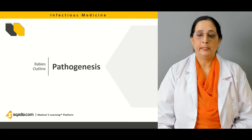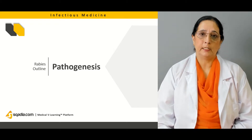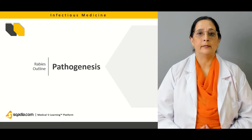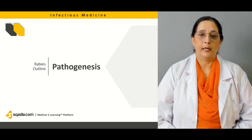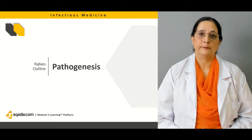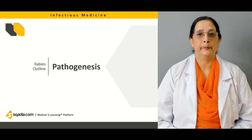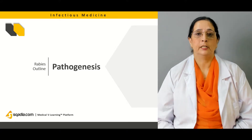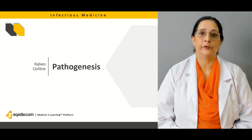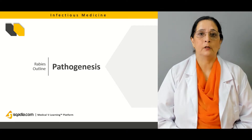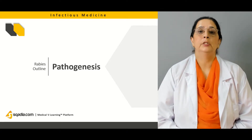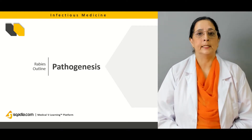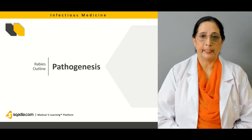Then we will discuss the pathogenesis of rabies — how the virus enters the body and how it transfers from the skeletal muscle, where it is replicated, through retrograde axonal transfer to the brain, and where else it is replicated also.